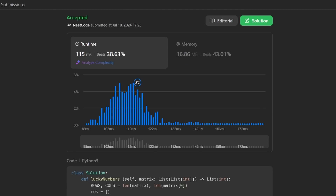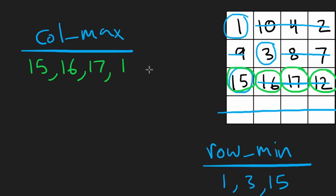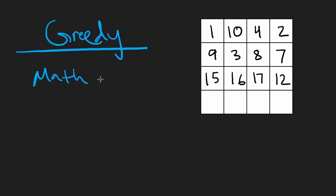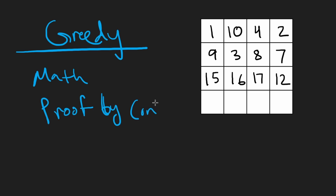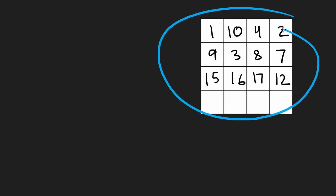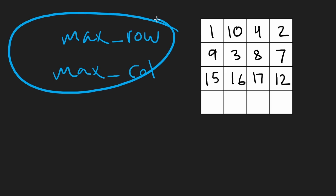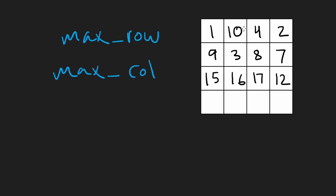But we can actually improve this further. The idea I'm going to use is the same idea you always use when implementing a greedy solution — I'm going to show you why the solution works using a math technique called proof by contradiction. When I first read the problem description, I thought it was asking us to find the max in each row and the max in each column, and I tried to think: how many solutions could there possibly be?